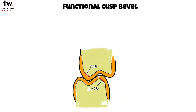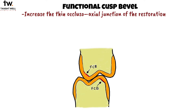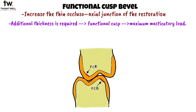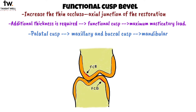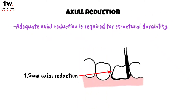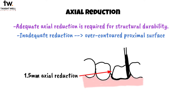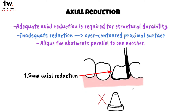Next is the functional cusp bevel. It is given to increase the thin occlusal-axial junction of the restoration and in cases where additional thickness is required, as the functional cusp undergoes maximum masticatory load. It is prepared on the palatal cusp for maxillary teeth and the buccal cusp for mandibular teeth. Lastly, adequate axial reduction is required for structural durability. Inadequate reduction may lead to an over-contoured proximal surface. Axial reduction is done such that it aligns the abutments parallel to one another. Over-reduction should not be done as it may lead to loss of retention.